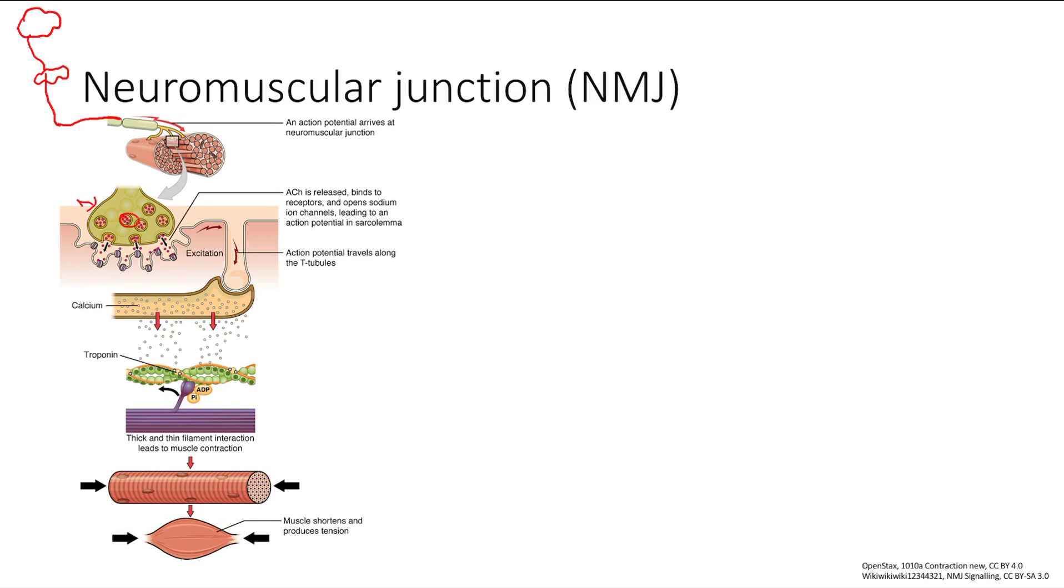Acetylcholine will hit the acetylcholine receptors in the muscle, and that will trigger an action potential in the muscle itself.